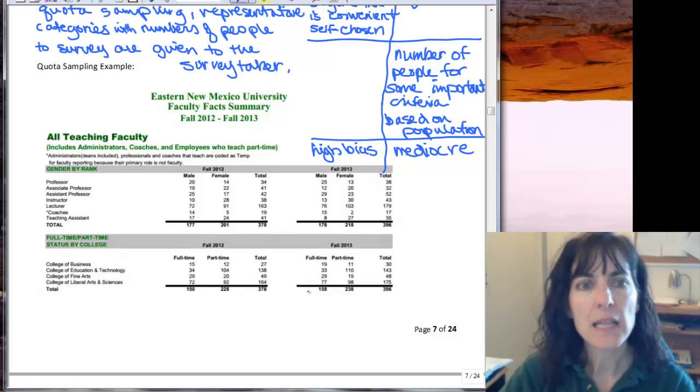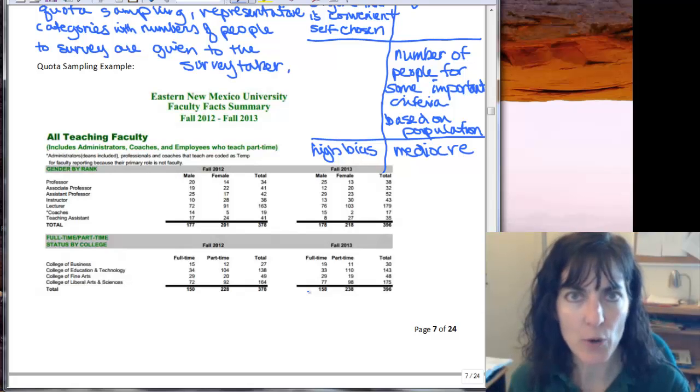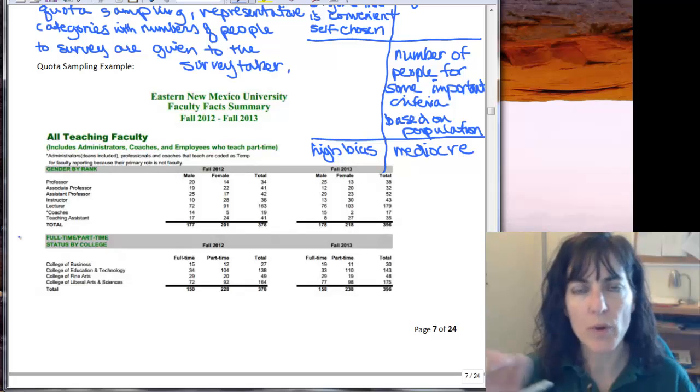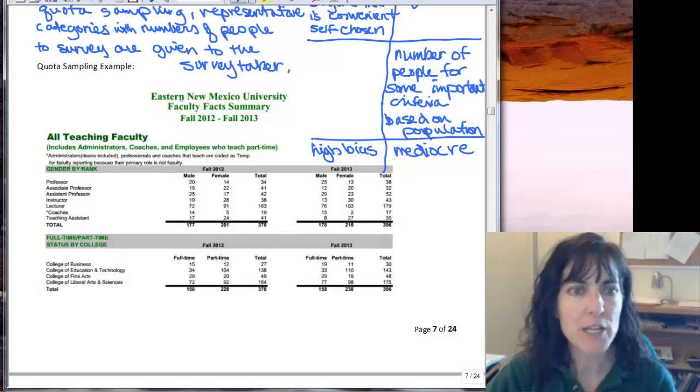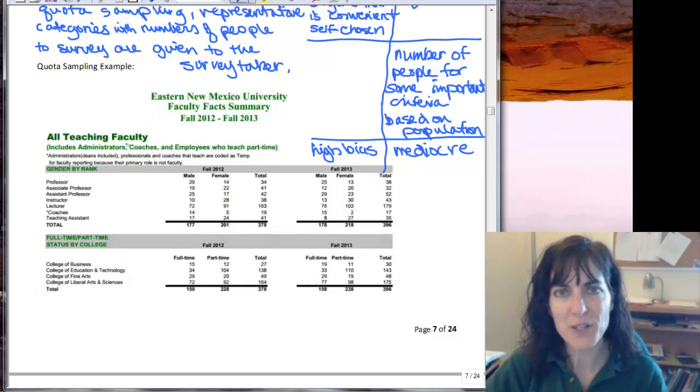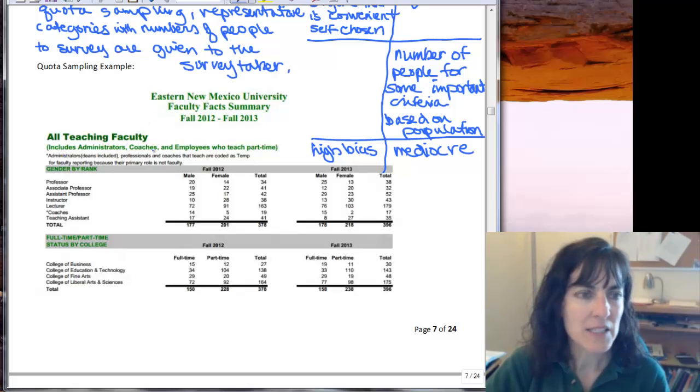Let's do our own quota sample so you have an idea of how you set up those quotas or the representative categories of people. This is information from our Eastern New Mexico website and it's about the teachers at Eastern and it has administrators,